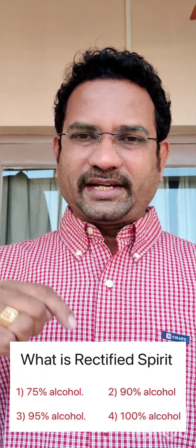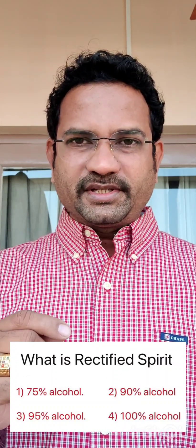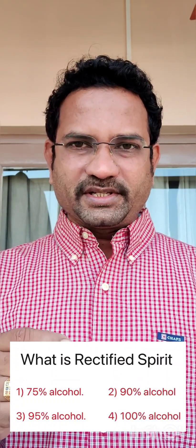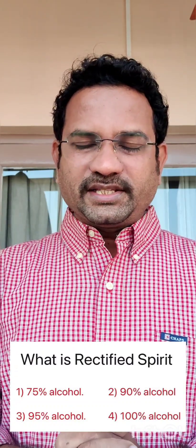Which of the following is a rectified spirit? Option A: 75% alcohol. Option B: 90% alcohol. Option C: 95% alcohol. Option D: 100% alcohol. Before answering this, let us understand the difference between alcohol and spirit. Alcohol is obtained from fermentation, while spirit is obtained by distilling this alcohol, giving a more concentrated product. So spirits have a higher concentration of alcohol than regular alcohols.